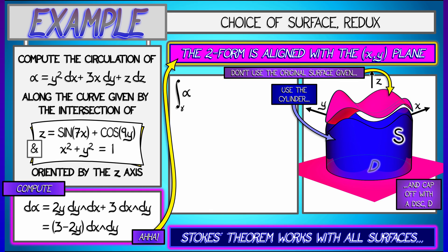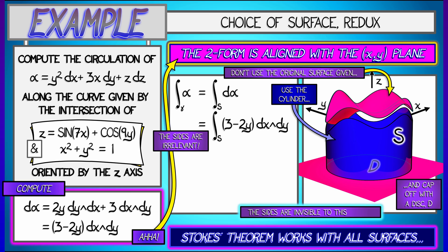Okay, so Stokes theorem says that the integral of this one form alpha over this curve gamma is the integral of d alpha over this bounding surface s. Now this bounding surface s is really well adapted to this two form because this two form is a multiple of dx wedge dy, and the sides, the cylindrical side, is invisible to that two form.